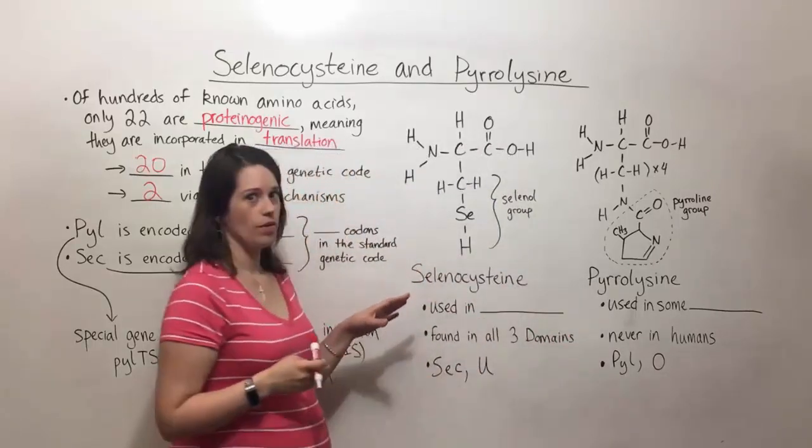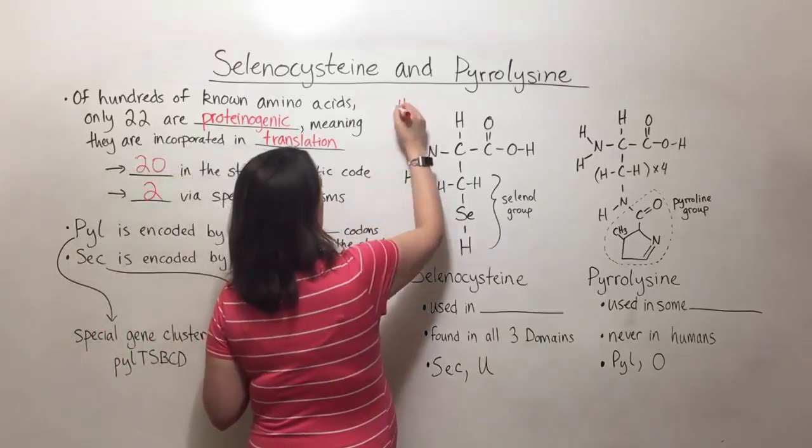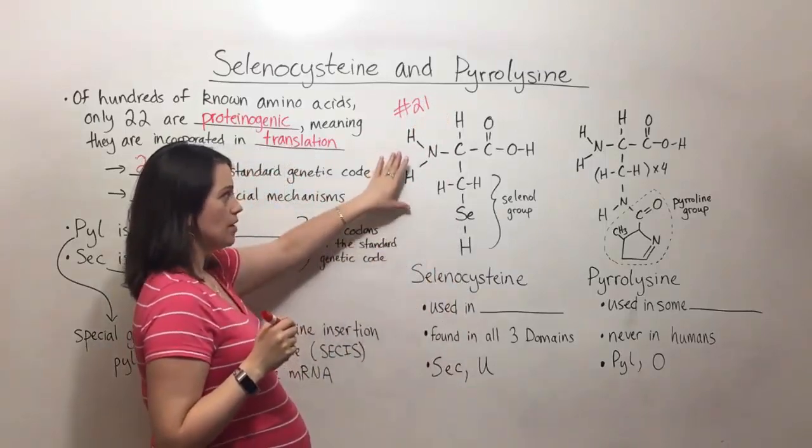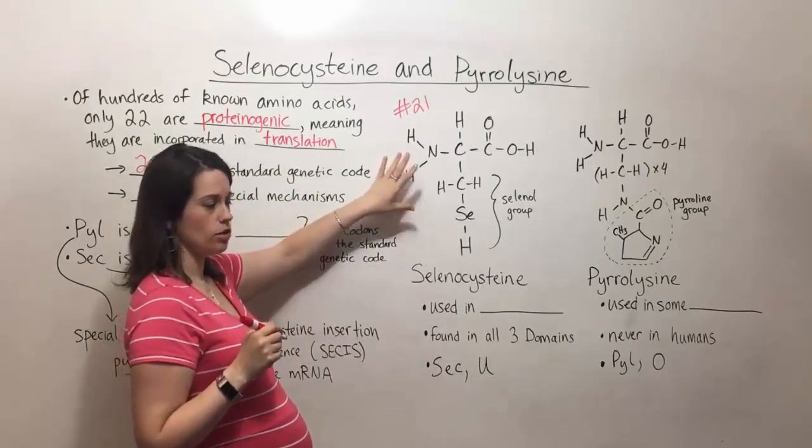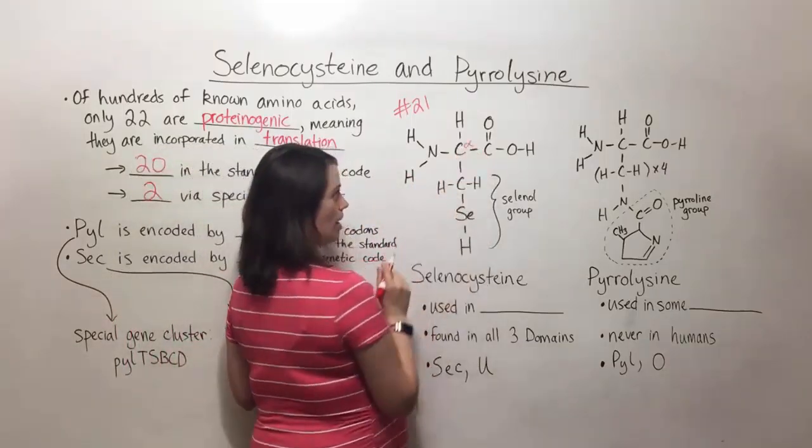Now let's take a look at what these two amino acids look like. We'll talk about the one that's typically numbered as number 21 first. That's selenocysteine. This is what selenocysteine looks like. So just to help orient you, we've got our alpha carbon right there.